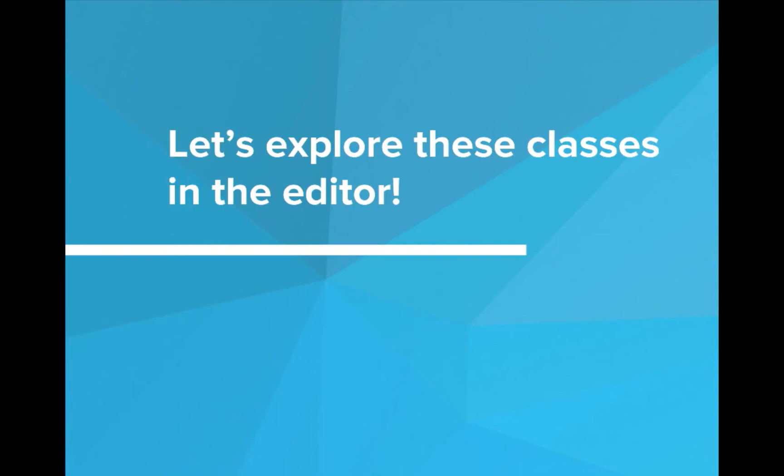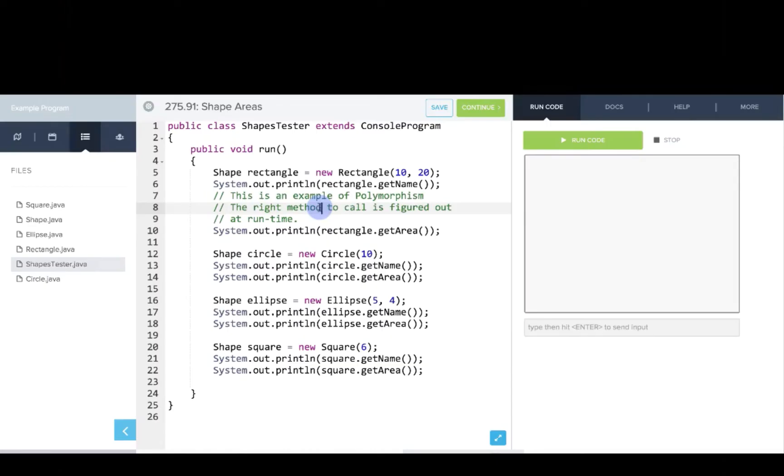So let's explore these classes in our editor. First I want to go back to the shapes example from earlier, but talk about it now a little bit more in the context of polymorphism. You can see here that we're making a new rectangle, making a new circle, making a new ellipse, making a new square, but that the type on the left is actually the more generic type. It's the parent class called shape. So these are all shapes. And when we call get area, we're actually choosing then at runtime which get area method to call. So if we run this code, you'll see it prints out the proper area formula by calling the proper implementation.